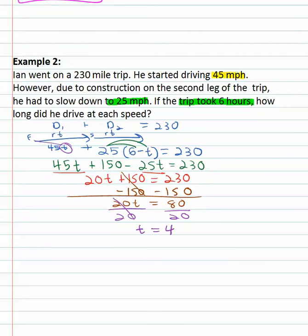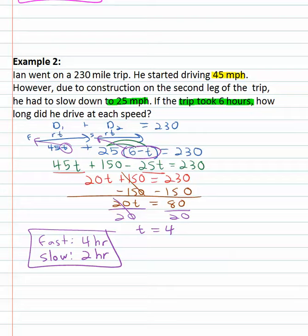That's the time when we were going fast. We were going fast for 4 hours, and then we had to slow down. That's 6 minus t, 6 minus 4. We slowed down for 2 hours. Ian traveled fast for 4 hours. Construction slowed him down for 2 hours. Total trip took 6 hours.